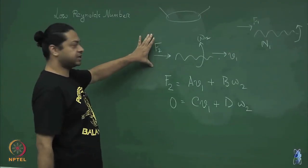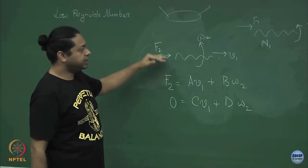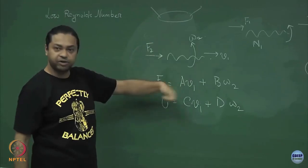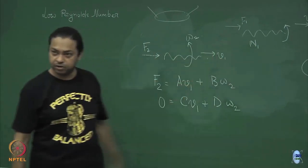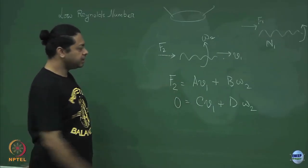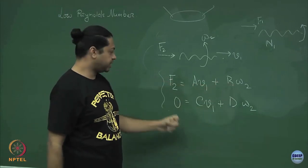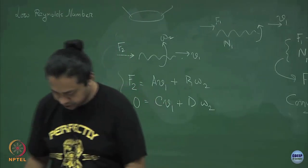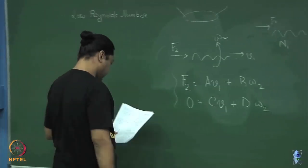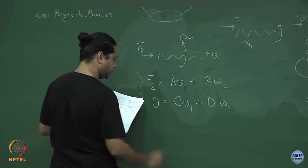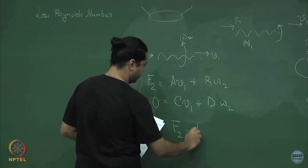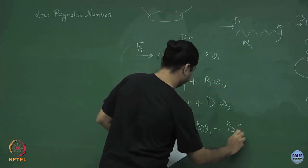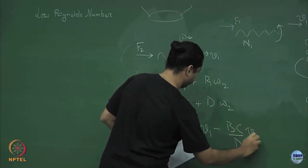I choose this very special value of f1 and N1 to switch off the rotation. The second thought experiment: I apply only a force — no torque — to get the same velocity v1 as before, but it will also have a rotation ω2. The equations are: f2 = A·v1 + B·ω2, and 0 = C·v1 + D·ω2. Solving these, ω2 = −(C/D)·v1, and f2 = A·v1 − (BC/D)·v1.